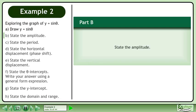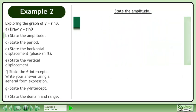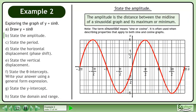In part b, we'll state the amplitude. The amplitude is the distance between the midline of a sinusoidal graph and its maximum or minimum. Note that the term sinusoidal means sine or cosine. It is often used when describing properties that apply to both sine and cosine graphs.